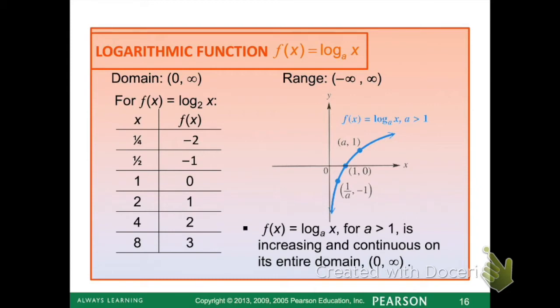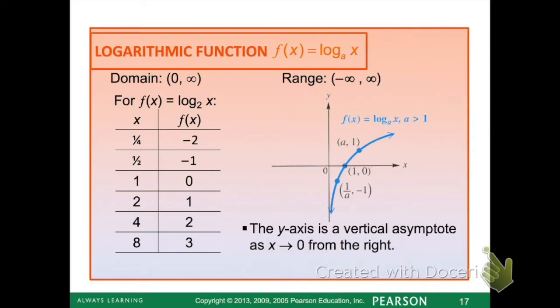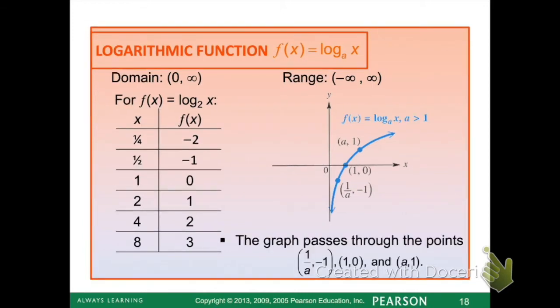The example graphed here is a log function where a is bigger than 1, so our graph is increasing, going up. Our y-axis is our vertical asymptote, and our graph passes through those three points. Those are going to be really important to have written down.